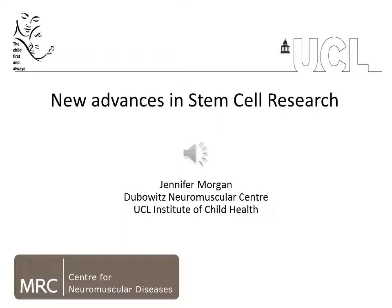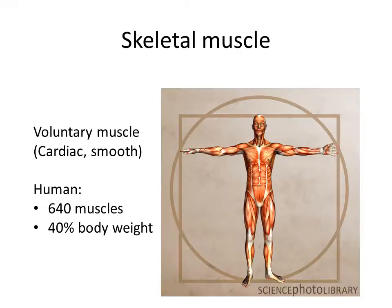When we're thinking about stem cells to treat muscular dystrophies, we're thinking of treating skeletal muscle. Skeletal muscle is a voluntary muscle, as opposed to cardiac muscle or smooth muscle — the muscles we use for posture or for movement. In our body there are over 600 muscles and it's 40% of adult body weight.